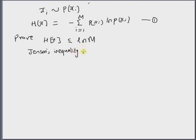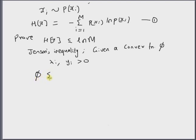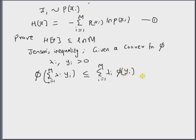Jensen's inequality is given as follows: given a convex function phi, weights lambda i, and variable yi, all positive, Jensen's inequality states that the convex function of the weighted sum — summation i equal to 1 to m of lambda i times yi — is less than or equal to the weighted sum of the convex function of that variable, that is phi of yi. Here phi is a convex function and lambda i and yi are always positive values.